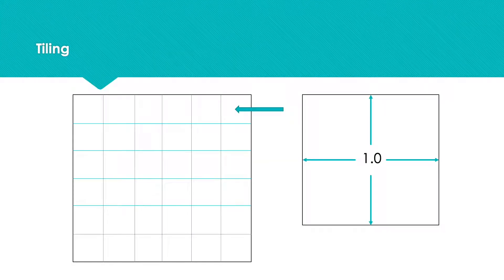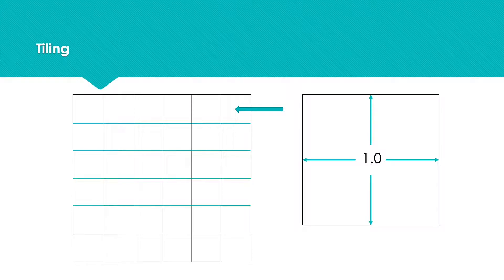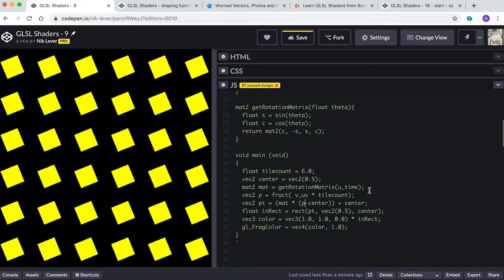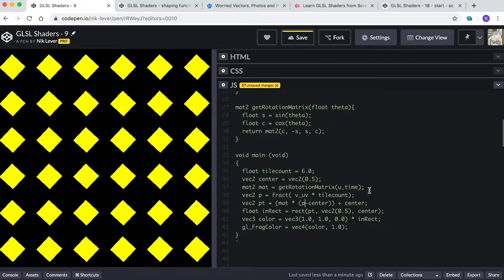How does this result in six squares? Effectively we've divided our screen into six spaces of zero-to-one coordinates across and down the screen. By multiplying a pixel's UV by six and then taking only the fractional part, we get 0-to-1, 0-to-1, 0-to-1 — six times across the screen and six times down the screen. We then call the rect method as though it is dealing with the coordinate space zero to one.